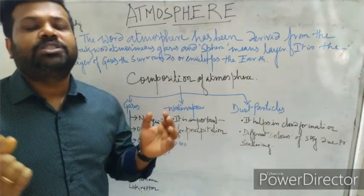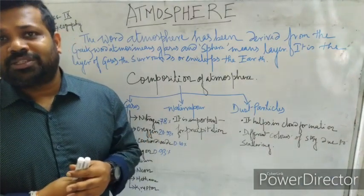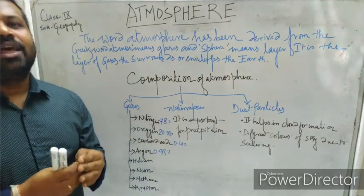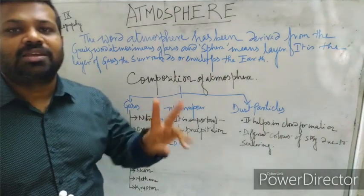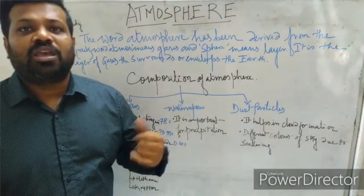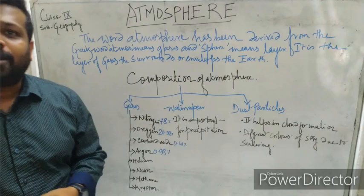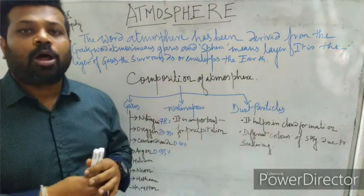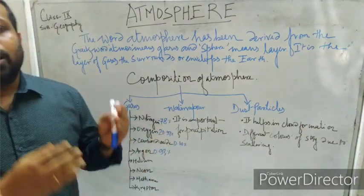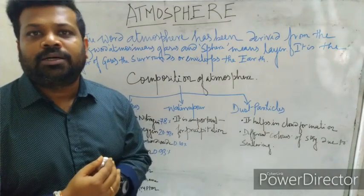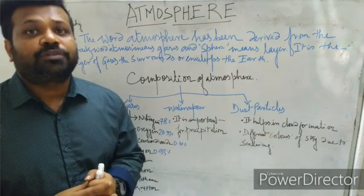Looking at the gases around us — oxygen, carbon dioxide — all these gases are present in the atmosphere. We know we have three layers: lithosphere, hydrosphere, and now we are going to know about the atmosphere. Atmosphere is the layer of gases; it is like an envelope to the earth. It is held to the earth due to the force of gravity.